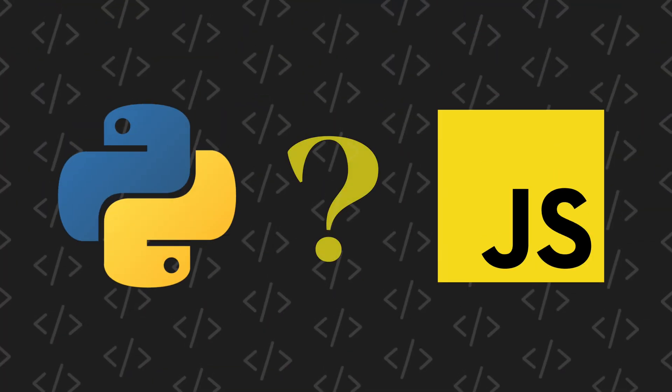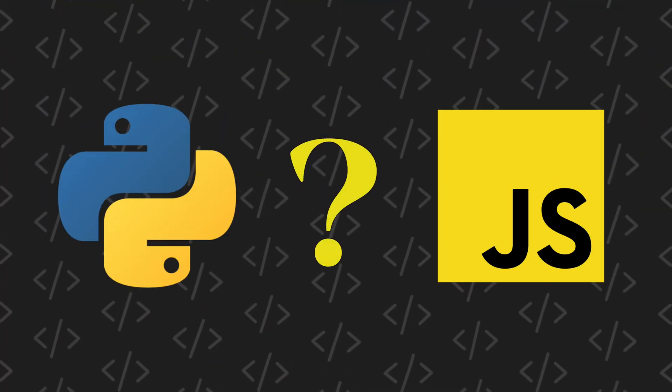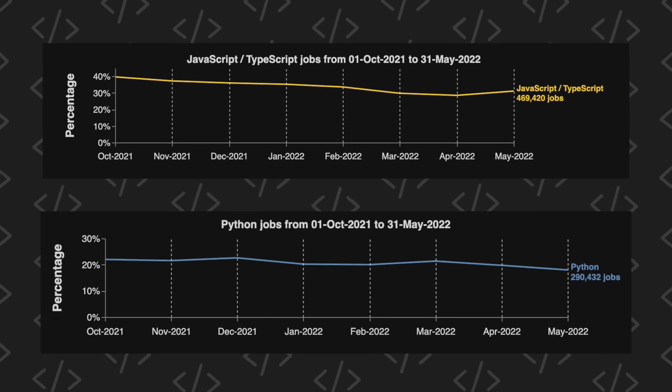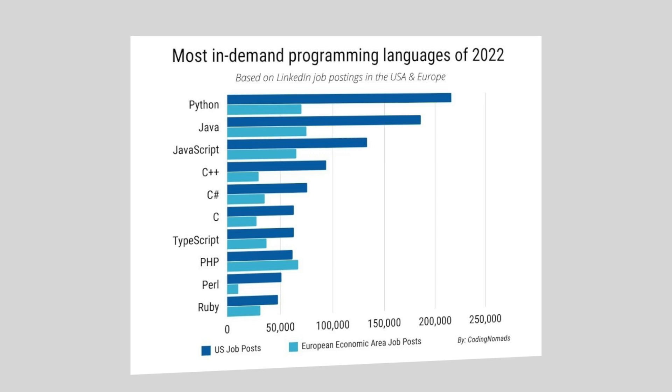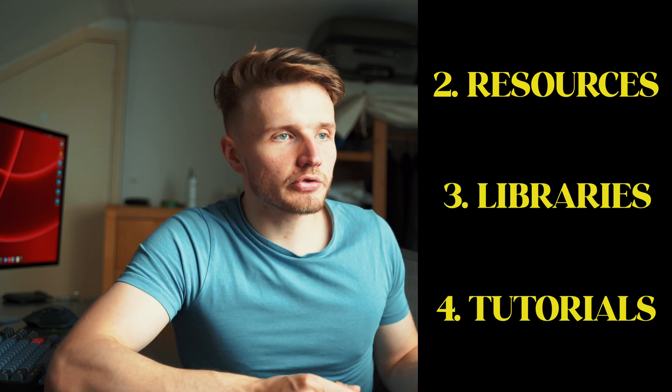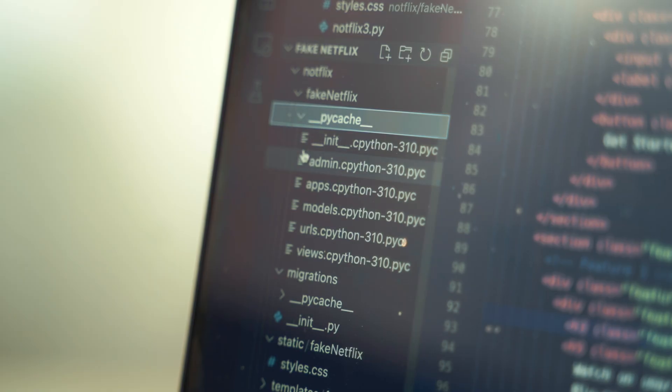So why are we focusing on Python and JavaScript specifically? The simple reason is they are some of the most popular languages right now, so there's a lot of job demand and a lot of job opportunities for both. They also have a lot of resources, libraries, frameworks, and tutorials, which makes creating things fast and easy. They're very high-level, easy to learn as a beginner, and great for getting to grips with programming fundamentals.